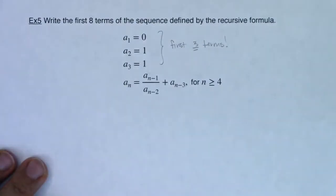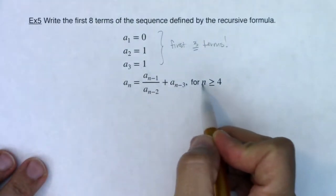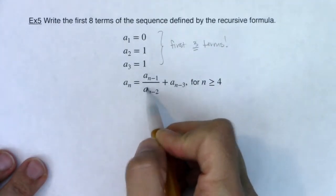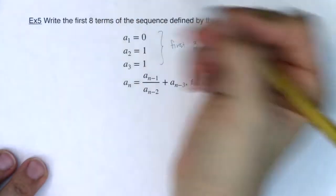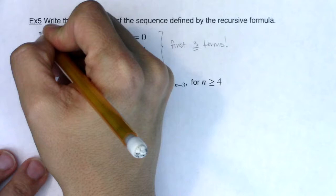So this is going to be a more intense recursive formula. And you can see it's saying for any term where n is greater than or equal to four, this is the formula we're going to use. So we still need to find a sub four, a sub five, a sub six, a sub seven, and a sub eight.